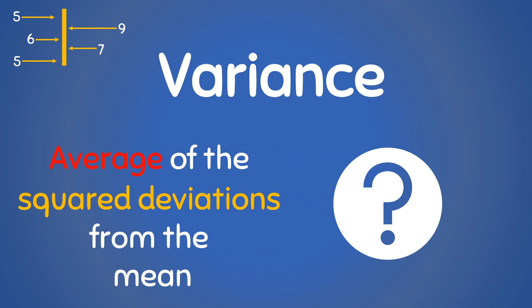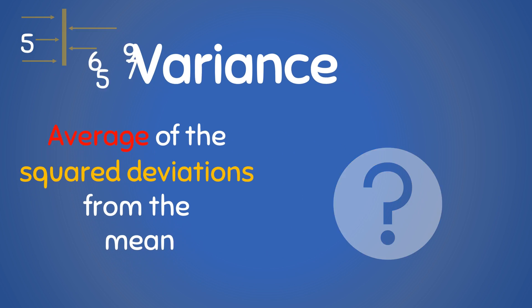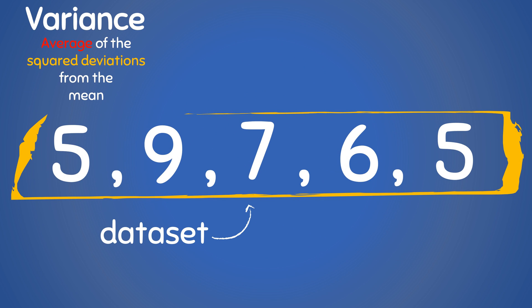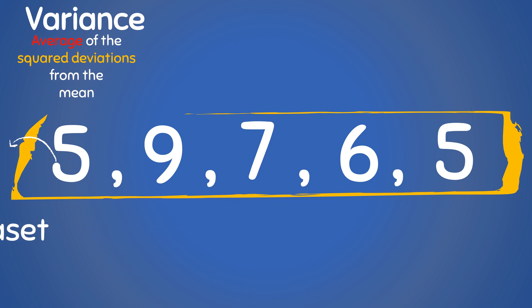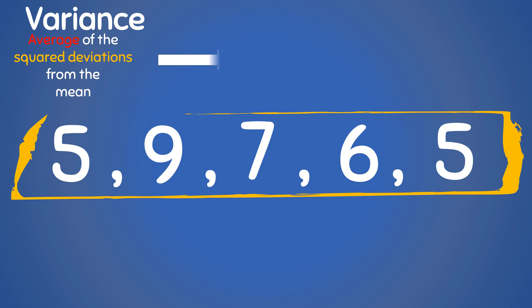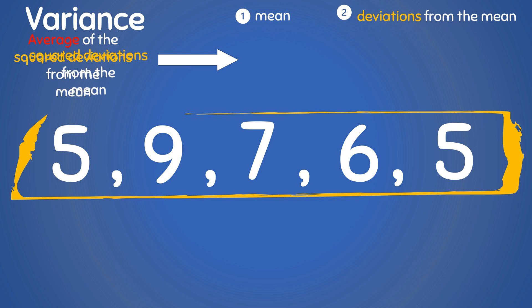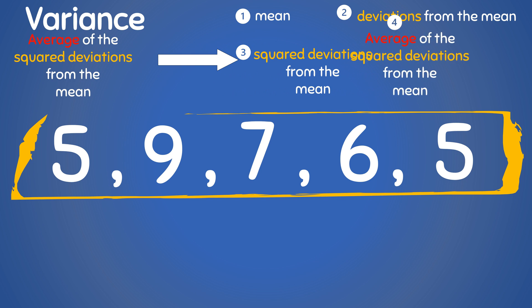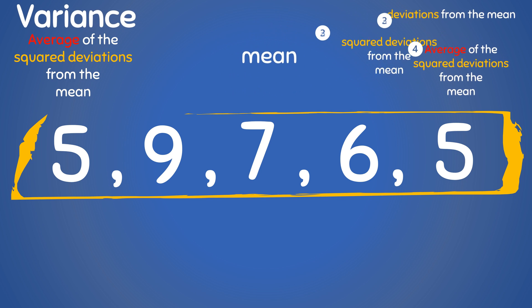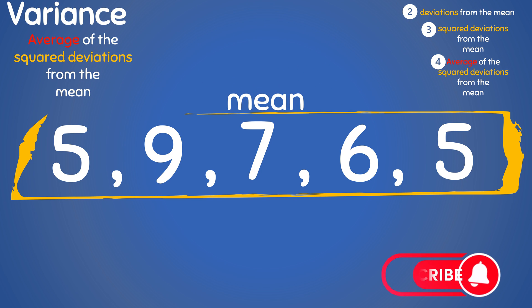But what does this even mean? Let us use our data set to understand this simple definition of variance. There are four keywords to build on this definition. First is the mean, then the deviations from the mean, then the squared deviations from the mean, and finally the average of the squared deviations from the mean. So let's first find the mean of this data set.